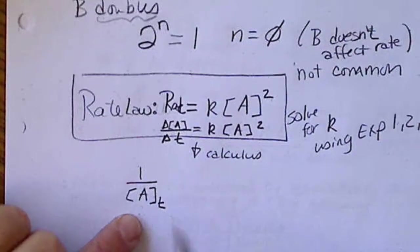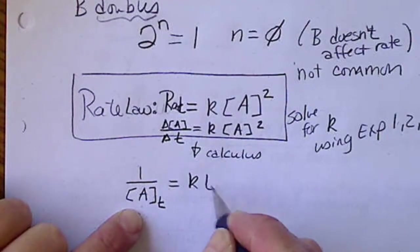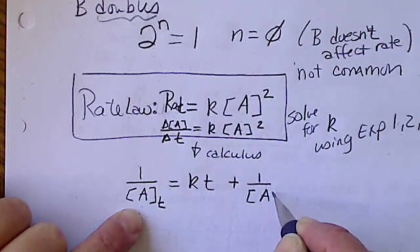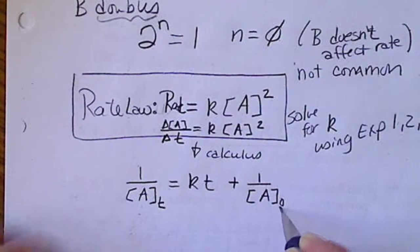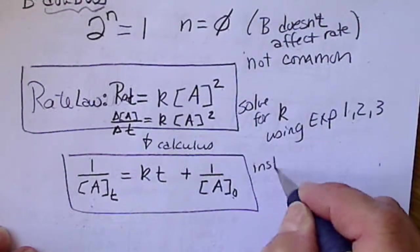But, for second order, we take this equation and do calculus. And we get the equation 1 over the concentration of A after T seconds is equal to positive KT plus 1 over the concentration at time 0.